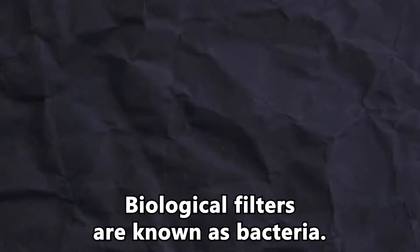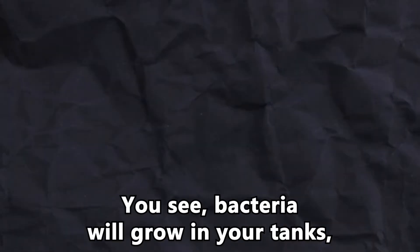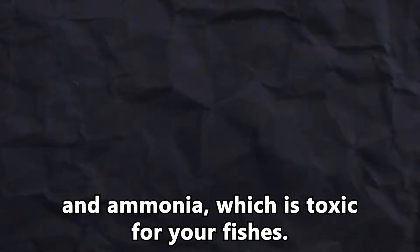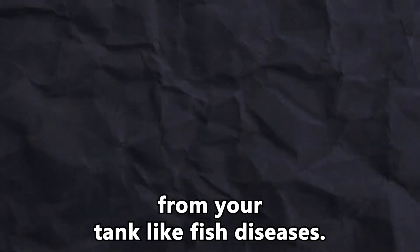Biological filters are known as bacteria. You see, bacteria will grow in your tank's substrate, glasses, in simple words in your whole tank. These tiny microorganisms will just eat the nitrates and ammonia which is toxic for your fishes. A chemical filter helps remove all the unwanted chemicals from your tank like fish diseases.